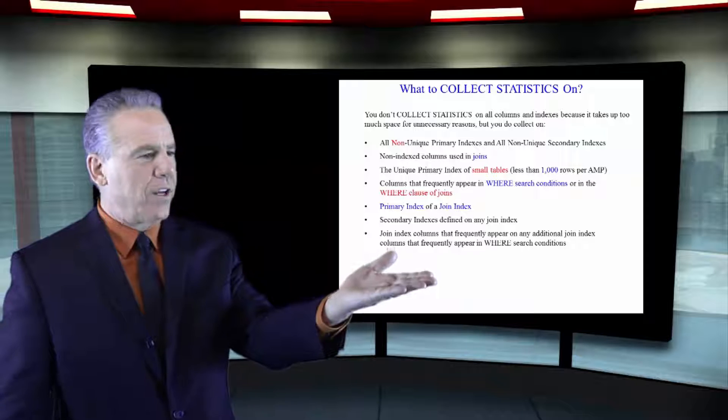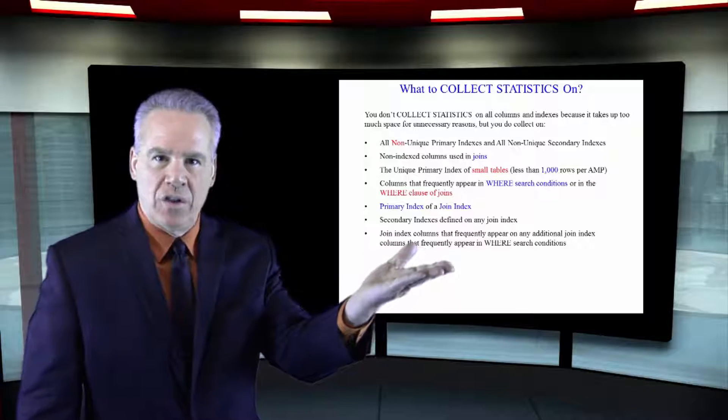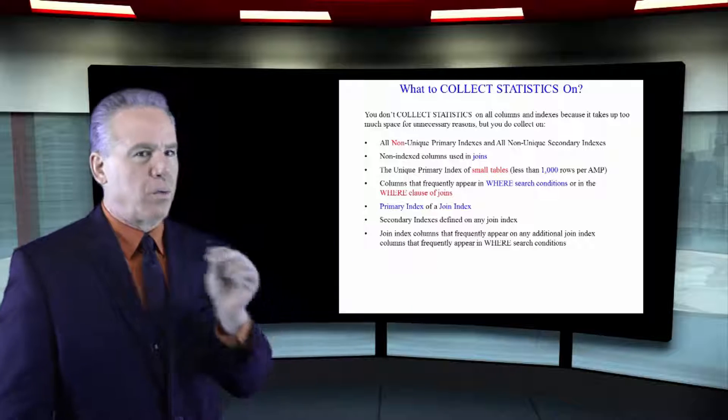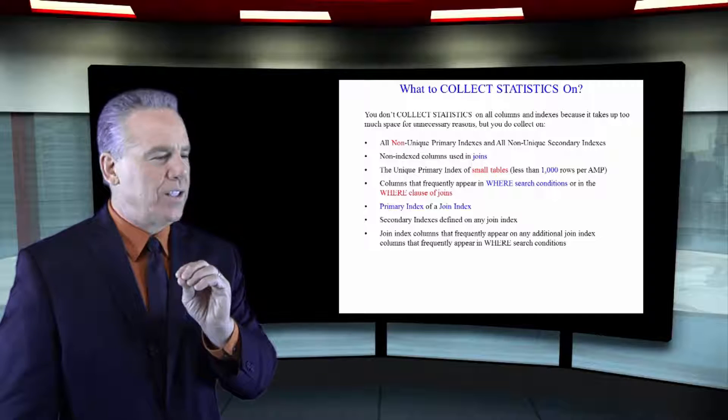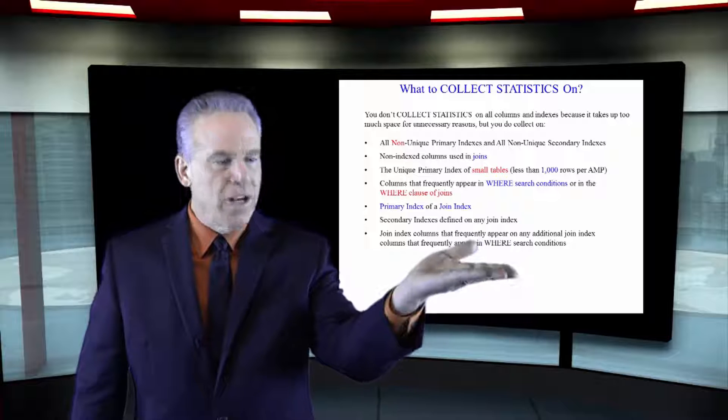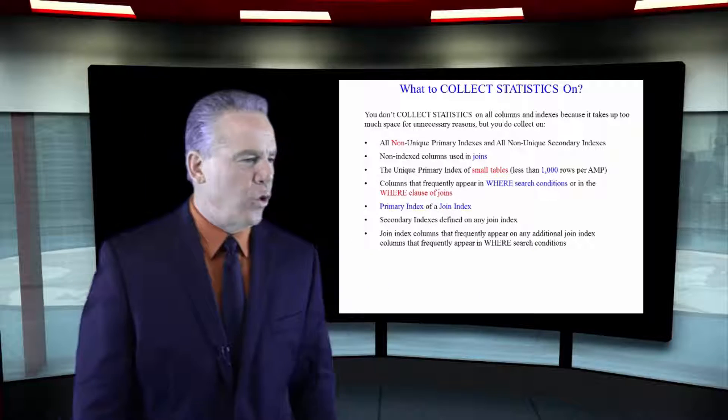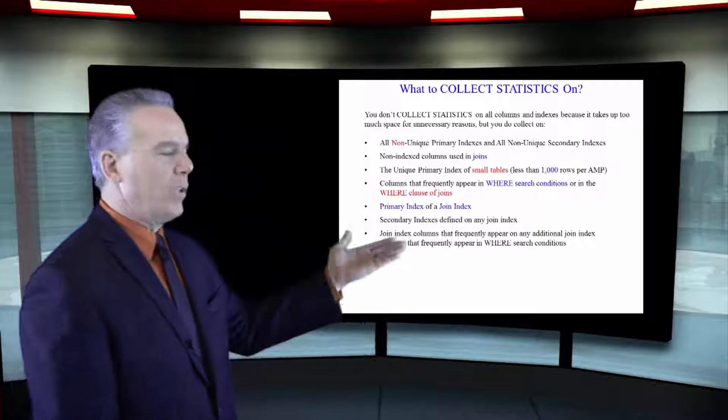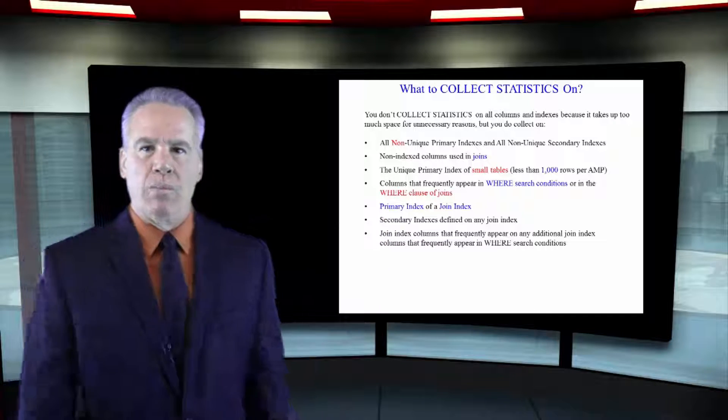Columns that frequently appear in the WHERE clause or search conditions or WHERE clause of joins. The primary index of a JOIN index. Important to collect statistics there. Secondary indexes that are defined on any joins, you want to collect statistics on those. And JOIN index columns that frequently appear in the WHERE clause. That's also important.